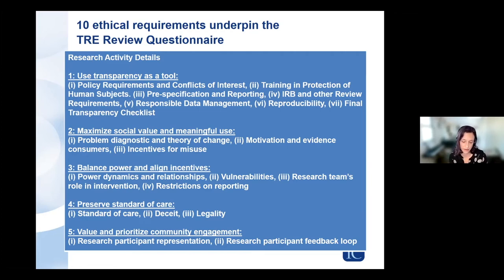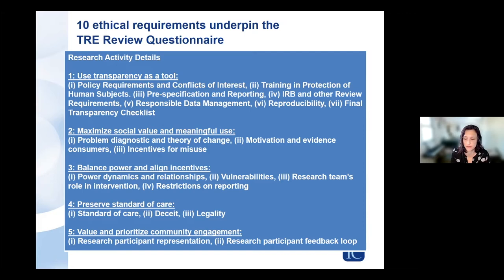The third requirement is to balance power and align incentives. This requires the team to examine potential power dynamics and relationships across research funders, implementing partners, research participants, and the research team themselves, as well as examining research participants' vulnerabilities, the research team's role in the intervention, and any potential restrictions placed upon the research team to report out on final analysis.